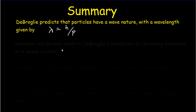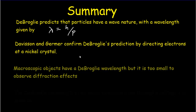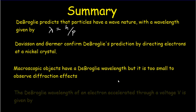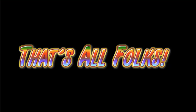Davisson and Germer did electron diffraction experiments and showed not only that electrons have a wavelength, but that the wavelength predicted by de Broglie was correct. A calculation with a wine bottle showed that macroscopic objects have wavelengths too small to ever observe their wave nature. Finally, we derived that the de Broglie wavelength of an electron accelerated through a voltage V is lambda equals h divided by the square root of 2m times the electron charge times the voltage.